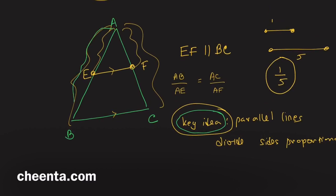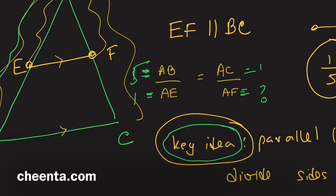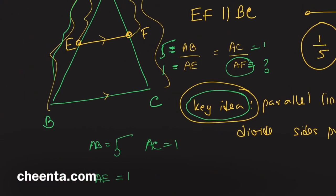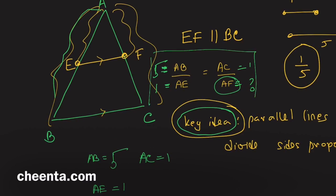Suppose AB equals five and AE equals one. Set up your triangle such that AB is five, AC is one, AE is one. Now just look into AF — that will give you the required value. You have to use the ratio equation AB over AE equals AC over AF.